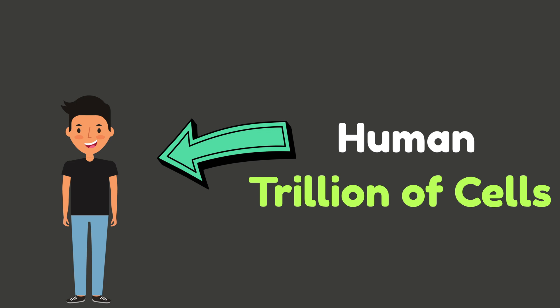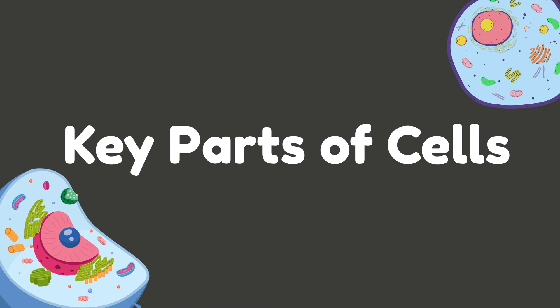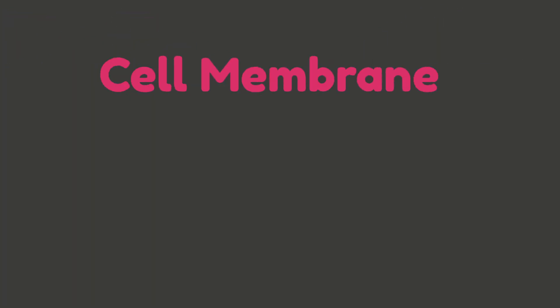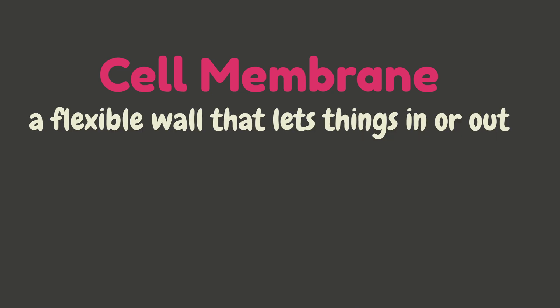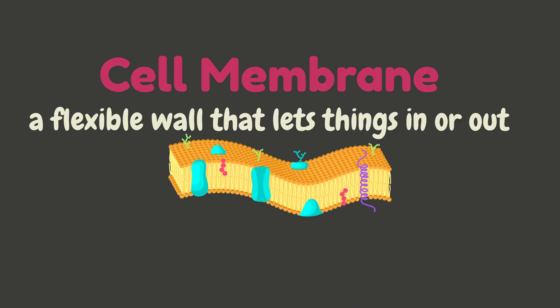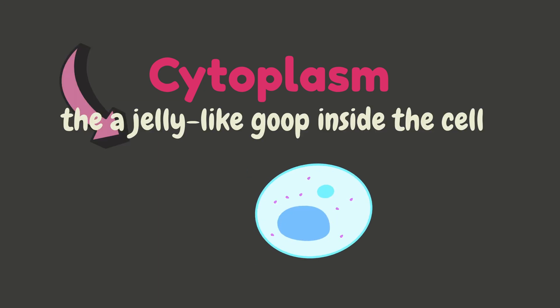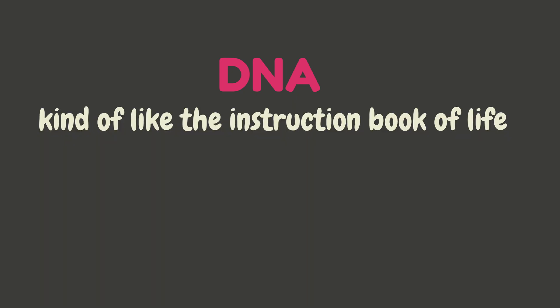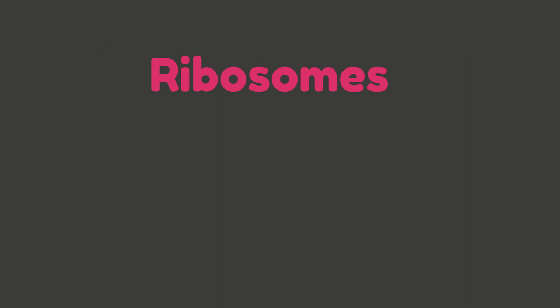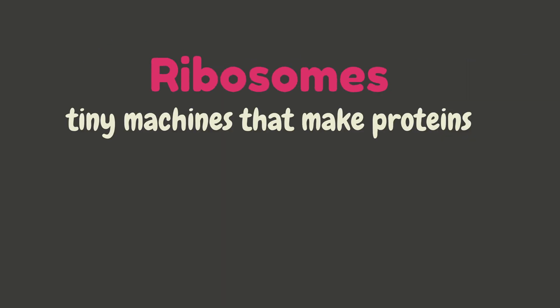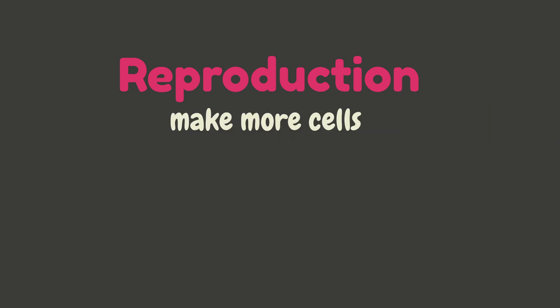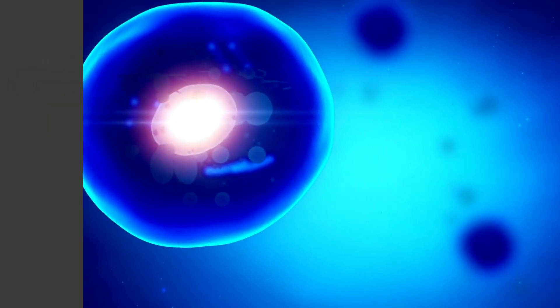All cells, no matter how big or small, usually have a few things in common. Let's look at the key parts of a cell. First up is the cell membrane — a flexible wall that lets things in or out of the cell. Next is cytoplasm, the jelly-like goop inside the cell. Then DNA, kind of like the instruction book of life. Next, ribosomes — tiny machines that make proteins. And lastly, a way to reproduce, multiply themselves, or make more cells. Something like this. Pretty cool, right?